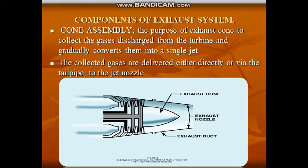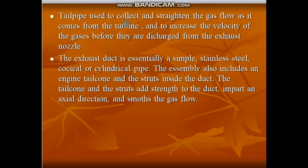We will start talking about the exhaust cone, or cone assembly. The purpose of the exhaust cone is to collect the gases discharged from the turbine and gradually convert them into a single jet. The collected gases are delivered either directly or via the tailpipe to the nozzle jet. The tailpipe is used to collect and straighten the gas flow as it comes from the turbine and to increase the velocity of the gases before they are discharged from the exhaust nozzle.